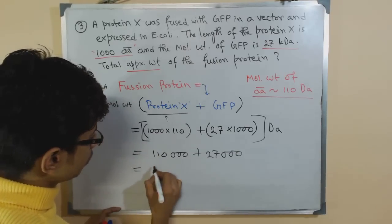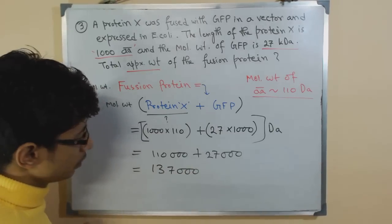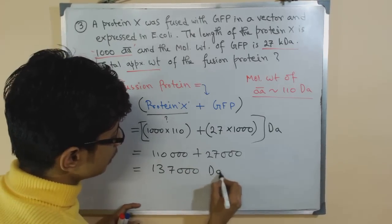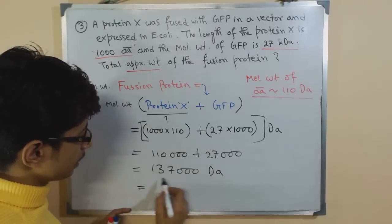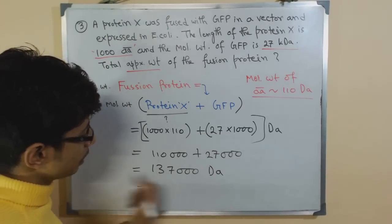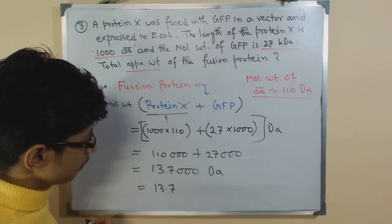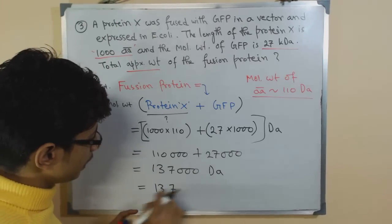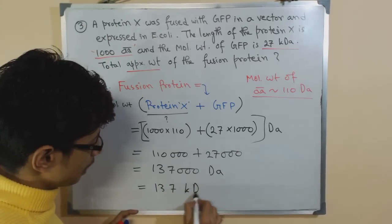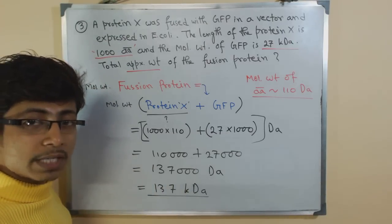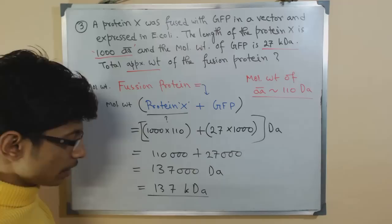137,000 Dalton. We can simply place it divided with 1000, it will give us 137 kilo Dalton, or simply 137,000 Dalton. So that will be the answer of our question.